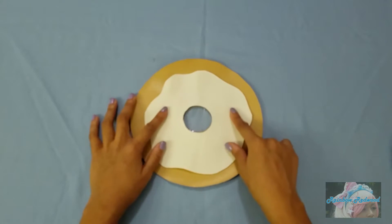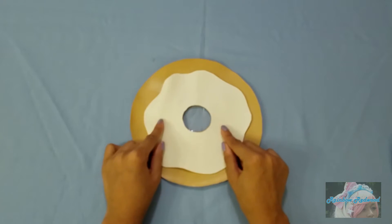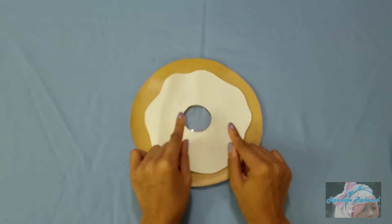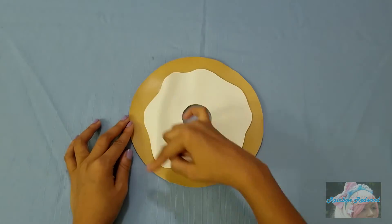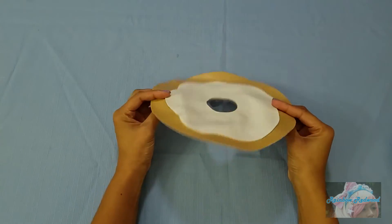For sewing this, I suggest using thread that matches your frosting and it doesn't have to be heavy duty. Just use the heavy duty for the construction of the bag. Here's my frosting sewn down.